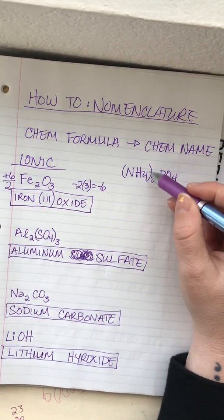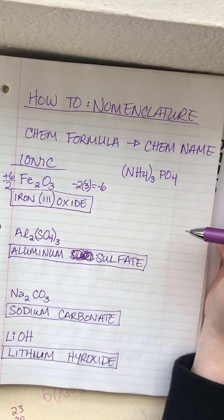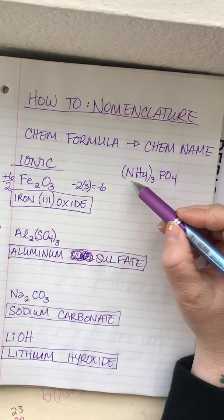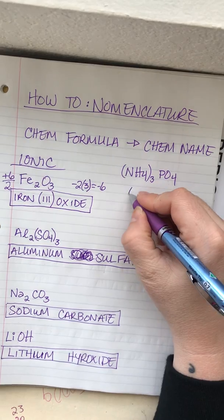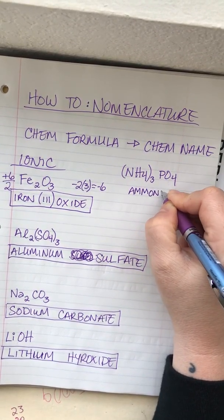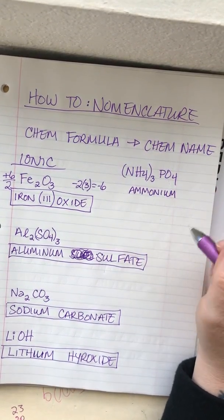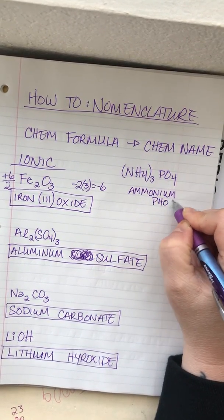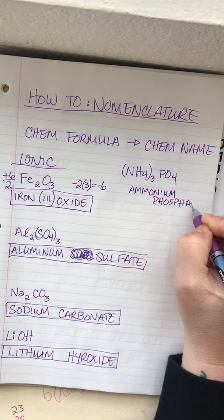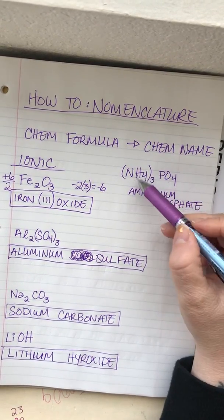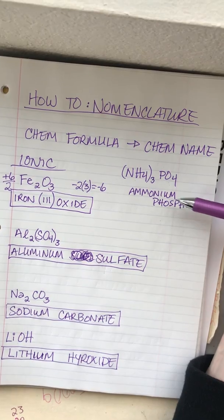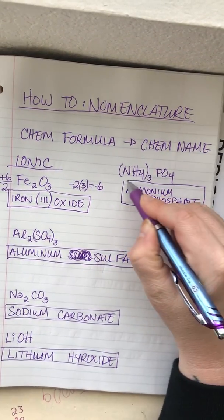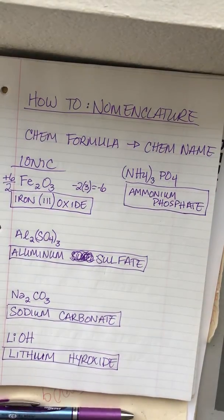Last, we have one that's a little more complicated because it has two polyatomic ions. NH₄⁺ is called ammonium and PO₄³⁻ is called phosphate. It looks tricky but it's a simple name: ammonium phosphate.